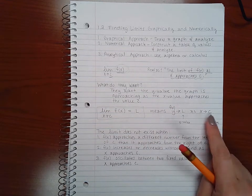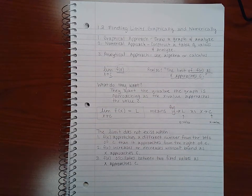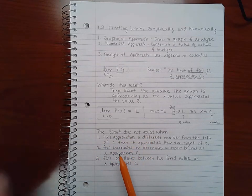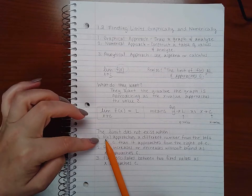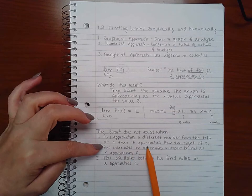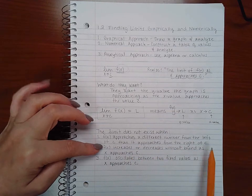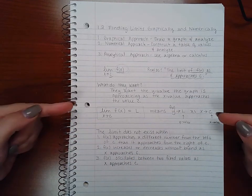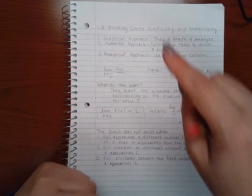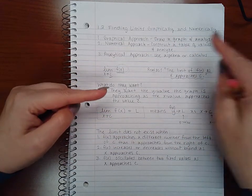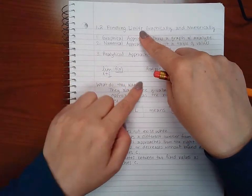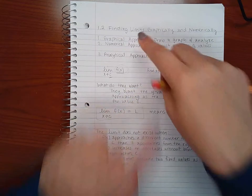Now the limit does not exist when you have one of three cases. One: f(x) approaches a different number from the left of c than it approaches from the right of c. So if you're taking the limit as you're getting closer and closer to this x value on the number line, what's the y value doing? If one y value is going up here and the other y value is going down here, those are not the same y value, and so the limit does not exist in that kind of case.